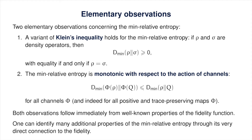We could at this point list additional properties of the min-relative entropy. The fidelity function possesses many interesting properties, and those properties translate directly to properties of the min-relative entropy. But there really isn't a point in doing this — we'll just use our knowledge of the fidelity function as we analyze the min-relative entropy.